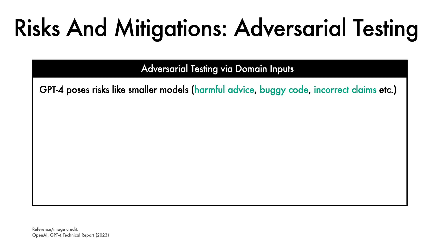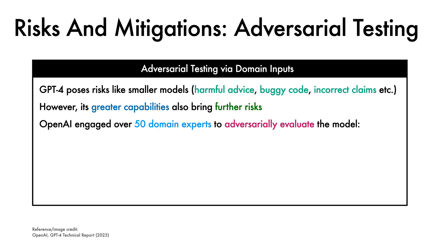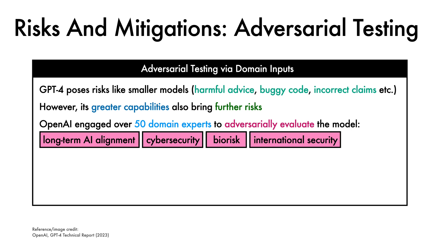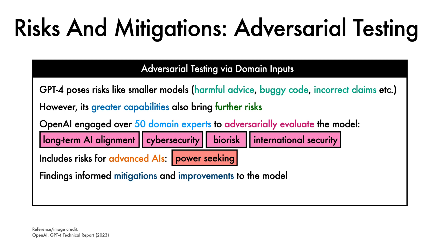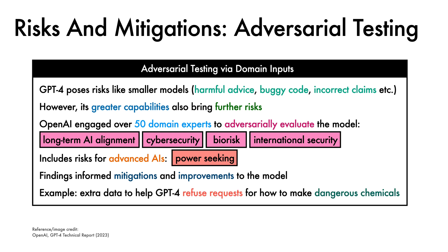It is found that GPT-4 poses risks that are similar to those of smaller models, including harmful advice, buggy code, and incorrect claims. However, its greater capabilities also bring further risks. To help explore these, OpenAI engaged over 50 domain experts to adversarially evaluate the models on topics like long-term AI alignment, cybersecurity, biorisk, and international security. This includes examining risks for advanced AIs such as power-seeking behaviour. The findings from these studies informed the mitigations and improvements to the model, for example collecting extra data to help GPT-4 refuse requests on how to make dangerous chemicals.